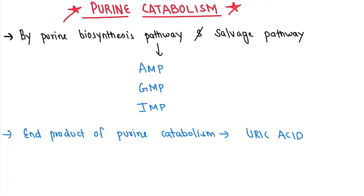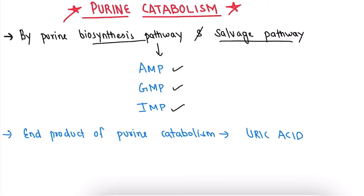Before starting, I recommend you watch my previous videos on purine metabolism. By the purine biosynthesis pathway and salvage pathway, AMP, GMP, and IMP are formed. We have studied those pathways in previous videos. Now we are going to study the degradation of AMP, GMP, and IMP.